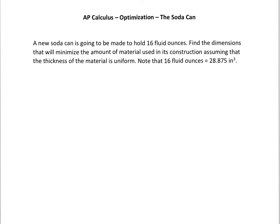So in other words, it has the same thickness all the way around: top, bottom, sides. Note that 16 fluid ounces is 28.875 cubic inches. So what we have here is we've got a can, and in our can we've got material that gets used, and we need to know what size to make this.